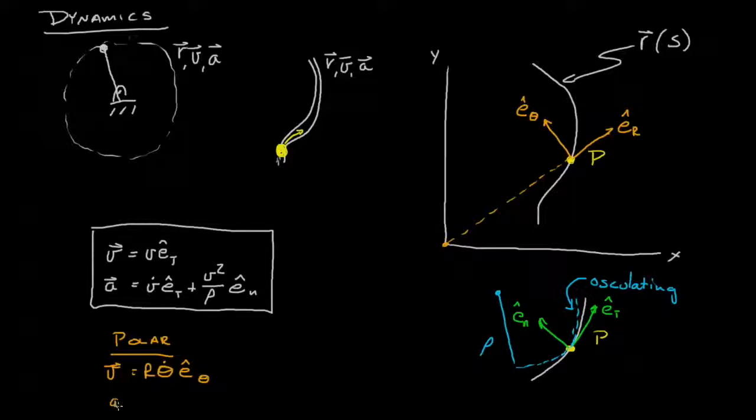And the acceleration for circular motion is r theta double dot e_theta, so r theta double dot, that's going to be the change in the velocity, so that's this term right here, it aligns very nicely with that, minus r theta dot squared e_r.